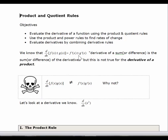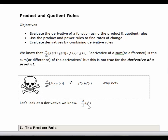But this doesn't work for products. Basically what we're saying is the derivative of a product — so the derivative of f(x) times g(x) — does not equal f'(x) times g'(x). The best way to show this is to find a counter-example, where the derivative of a product is not equal to the product of the derivatives.